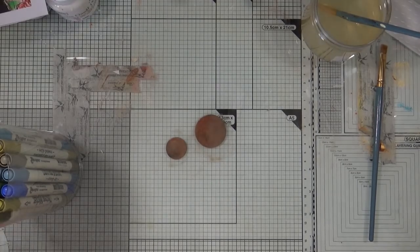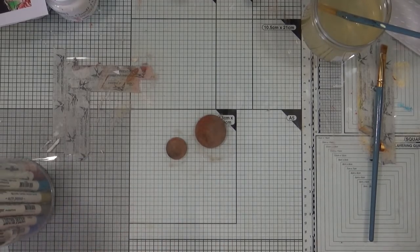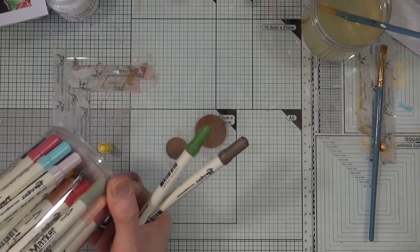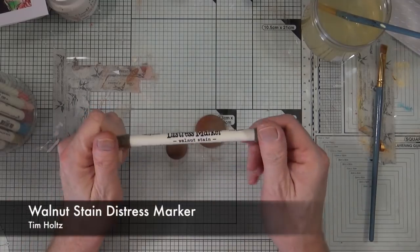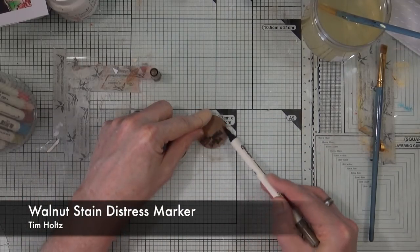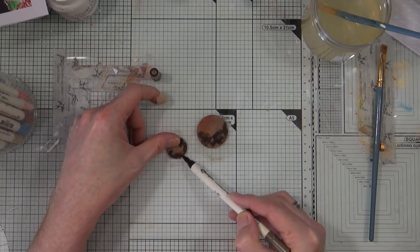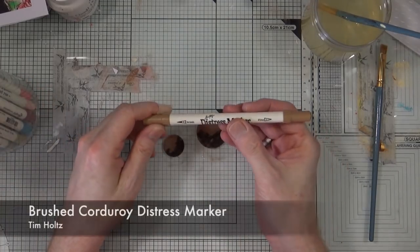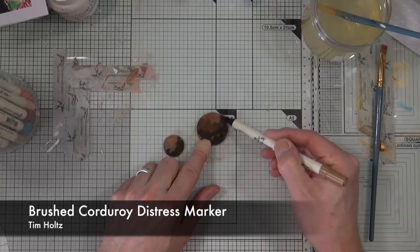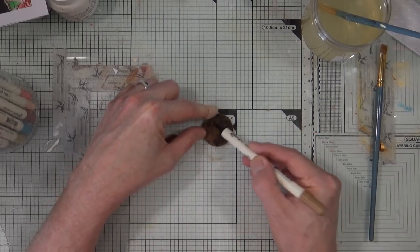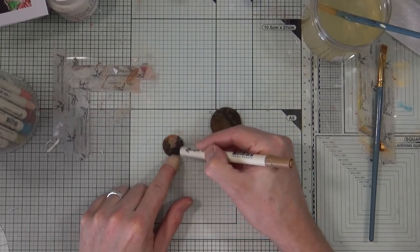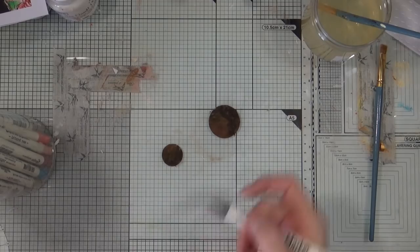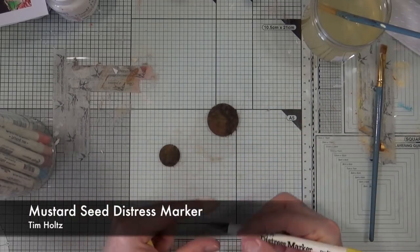Once they were dry I didn't think the color popped enough because it soaked into the grunge board, so I decided to go over the two circles using some distress markers. I've taken out the walnut stain. Just to add a little bit of contrast I'm also going to add a lighter color of brushed corduroy. And just to add a little bit of warmth into the mix I also decided I'm just going to add a tiny amount of mustard seed in there too.